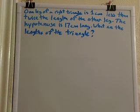Okay, so let me read you the problem. One leg of a right triangle is one centimeter less than twice the length of the other leg. The hypotenuse is 17 centimeters long. What are the lengths of the triangle?